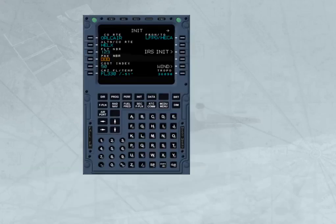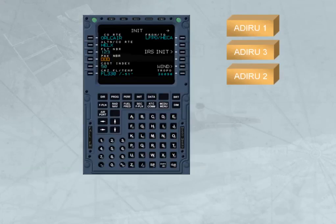The alignment phase is completed when the ADRs are initialized to an appropriate position. With GPS available, initialization is automatic using the GPS position and does not require pilot action. However, automatic initialization may be manually overwritten during the alignment phase by accessing the IRS init page. This method will be explained later in the operation module.